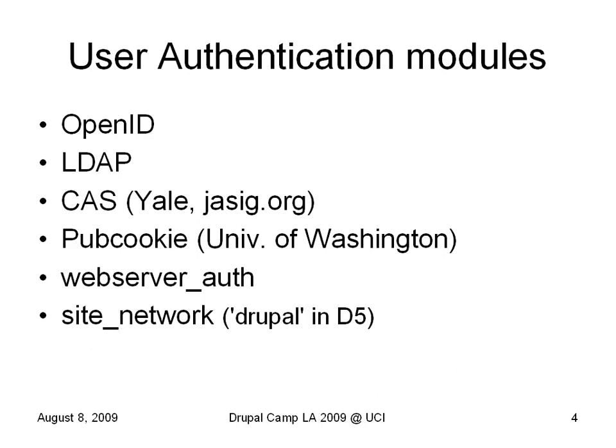There are a lot of user authentication modules available for Drupal, and my advice is if you can use one of those, please just go ahead and do so. OpenID is my favorite — I'm pushing for the campus to use OpenID here at UC Irvine. We do have LDAP at UCI but it's sort of an afterthought; we're still using an old directory service. CAS is Central Authentication Service — it's a Java thing, used by uPortal, which we use here at UC Irvine for the staff portal at snap.uci.edu. Web server auth is a module that lets you control access through the .htaccess file. And lastly, the site network module — that's the one that used to be called the Drupal module in Drupal 5 — lets you log into one Drupal site through an account on another Drupal site.